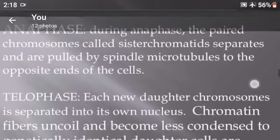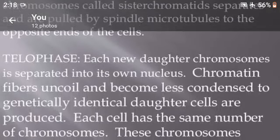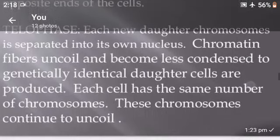Telophase: each new daughter chromosome is separated into its own nucleus. Chromatin fibers uncoil and become less condensed. Two genetically identical daughter cells are produced, each with the same number of chromosomes, which continue to uncoil.